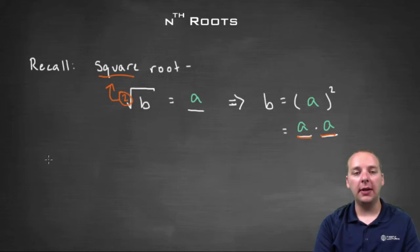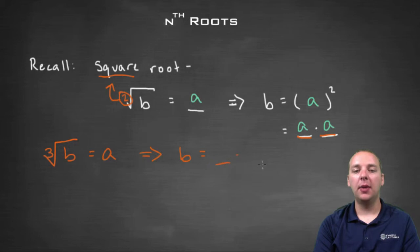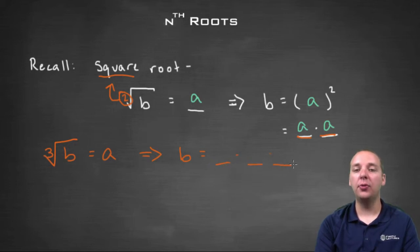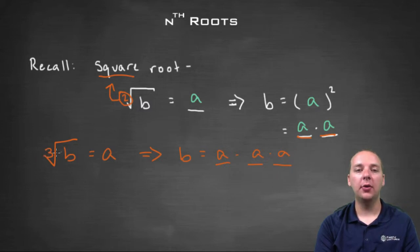On the other hand, if it's the third root of b equal to a value, that means you look for a number that, if multiplied by itself twice — in other words, three factors of a: a times a times a — gives you b. This is called a third root.